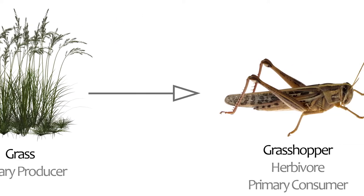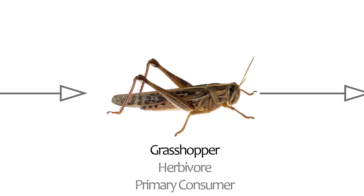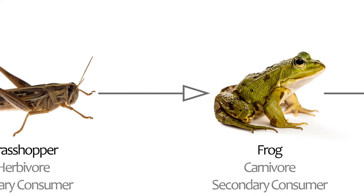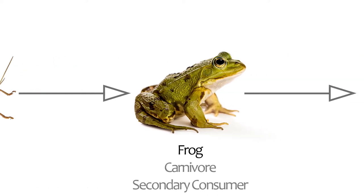Next on the food chain is a herbivore, in our case being a grasshopper. Herbivores only eat plants and are always the second organism in a food chain. This second organism is also called the primary consumer since it is the first consumer in the food chain. Next is our first carnivore, being a frog. Carnivores only eat meat, meaning they are usually predators. A predator is an animal that hunts other animals, with the target being called prey. Not all carnivores are predators though — they are also scavengers, which I'll get back to later in the video.